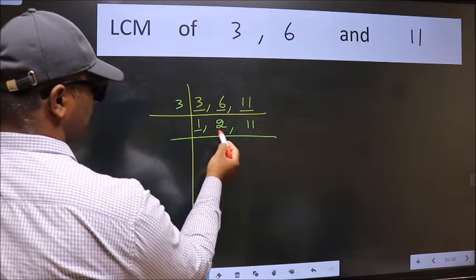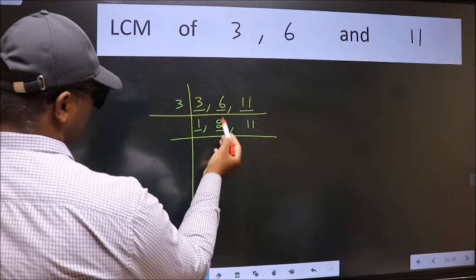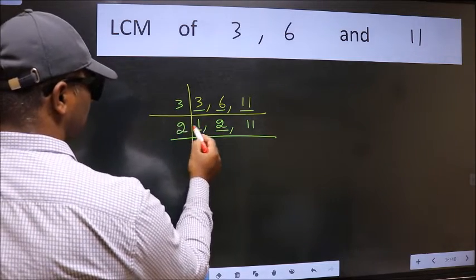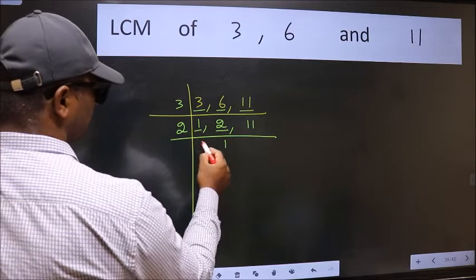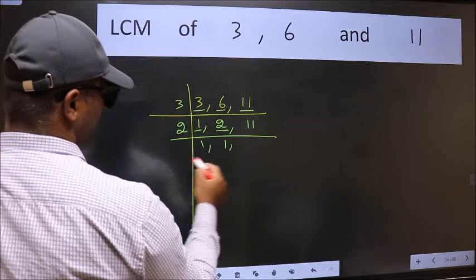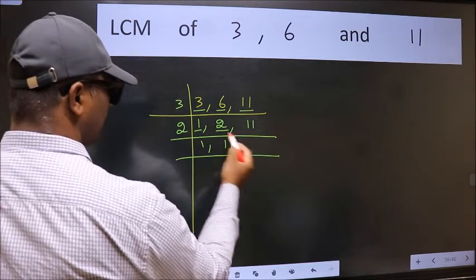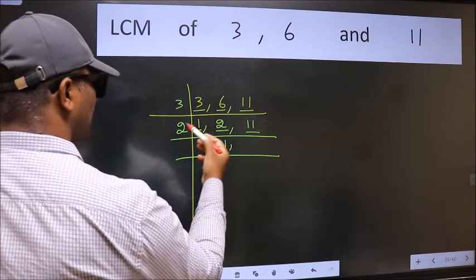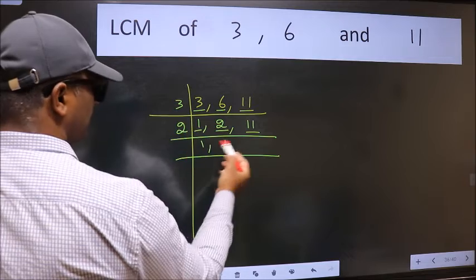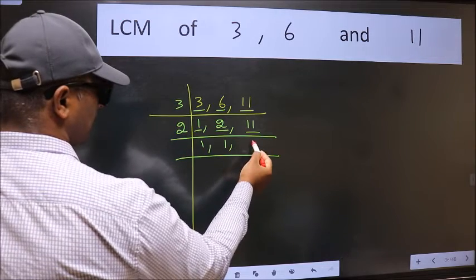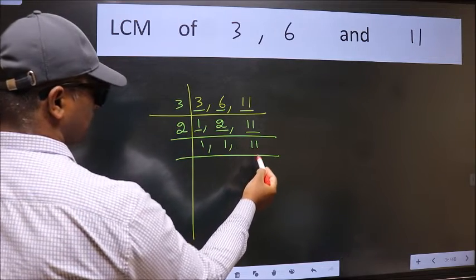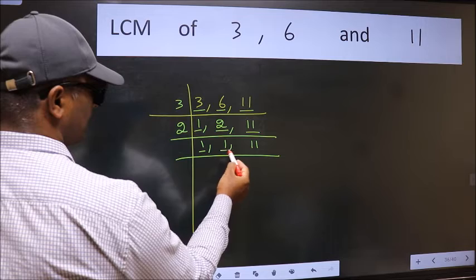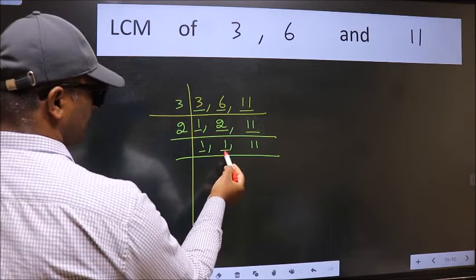So focus on the next number, 2. 2 is a prime number, so 2 divides by 2. The other number 11 is not divisible by 2, so we write it down as it is.